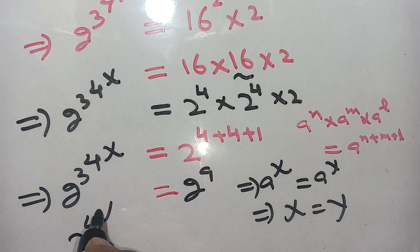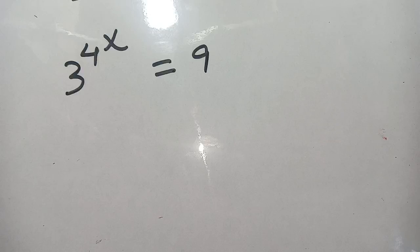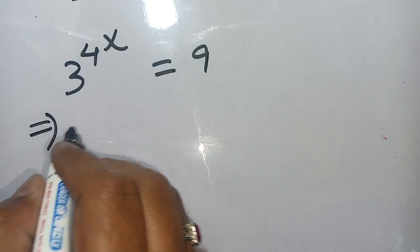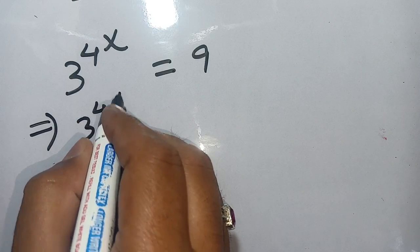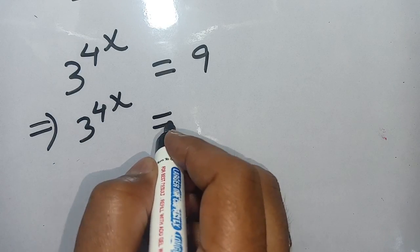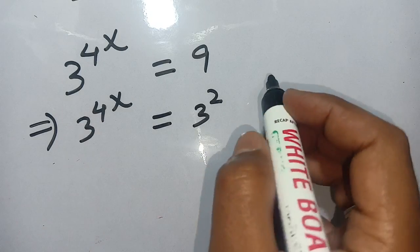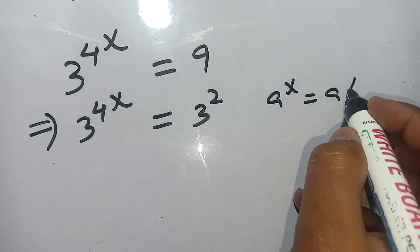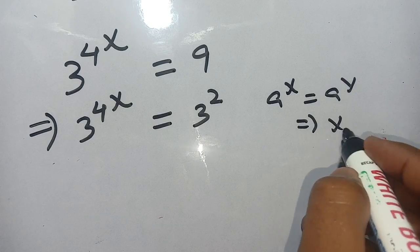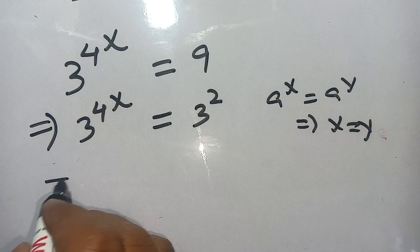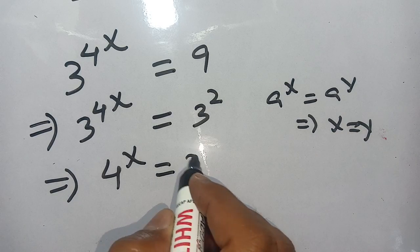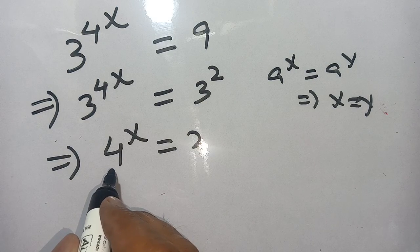We can write 9 in terms of 3: we get 3 raise to power 4 raise to power x is equal to 3 raise to power 2. Now we use the same identity — a power x equals a power y implies x equals y. Thus it gives 4 raise to power x is equal to 2.